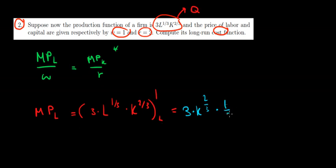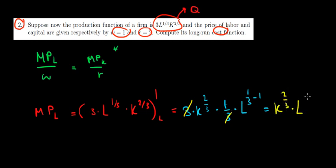We take the power down and we have l to the power of 1/3 minus 1. Working out the math, 3 and 3 cancel out, so we have k to the power 2/3 times l to the power of minus 2/3. So we've got our first marginal product: MPL = k^(2/3) * l^(-2/3).